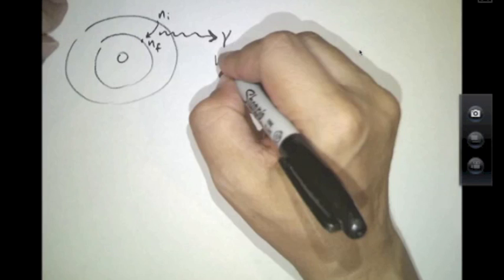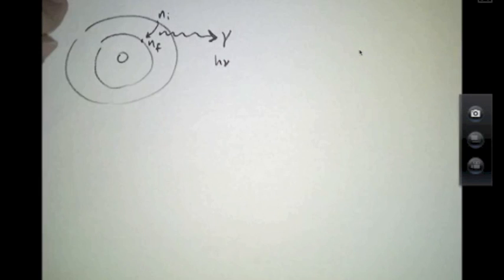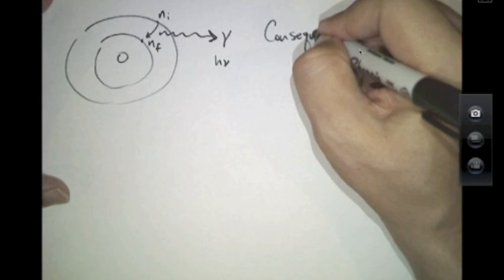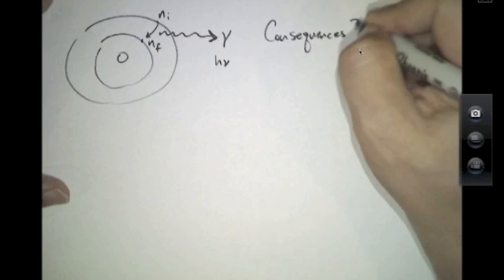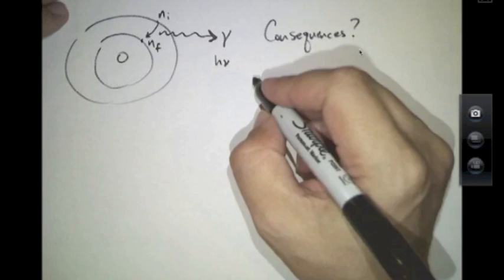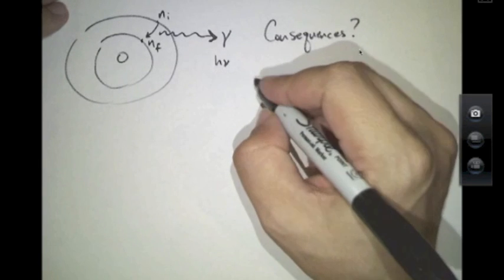This would result in the emission of energy in the form of a photon whose energy would be H times nu. So what are the consequences of Bohr's theory? Well, Bohr was able to derive formulae that essentially reproduced the Balmer series. He did so somewhat empirically.